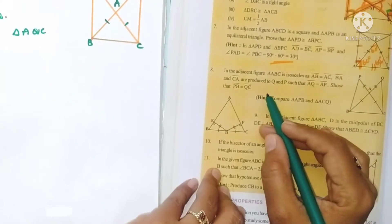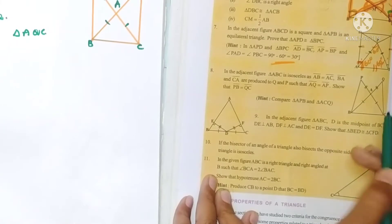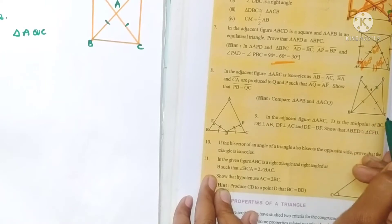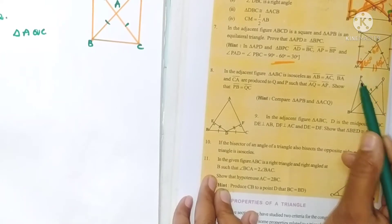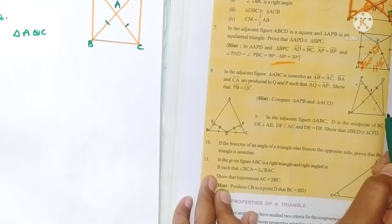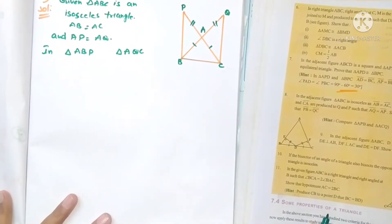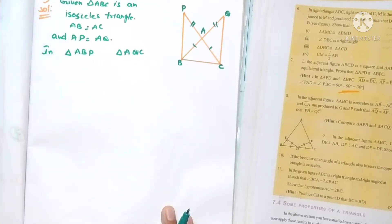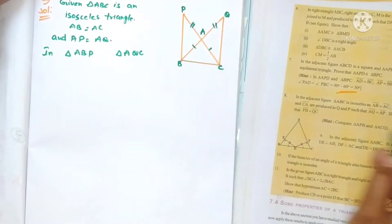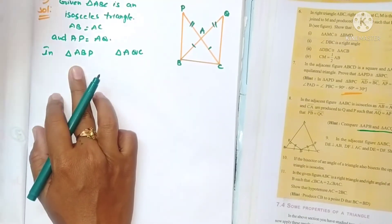Eighth problem: in the adjacent figure, triangle APC is isosceles, meaning two sides are equal. AB equals AC. BA is produced to Q and CA is produced to P such that AP equals AQ. We have to prove that PB equals QC. The hint says to compare triangles APB and ACQ.